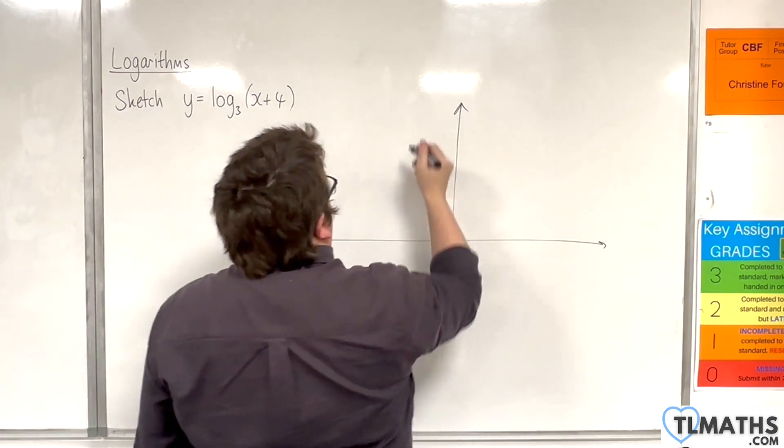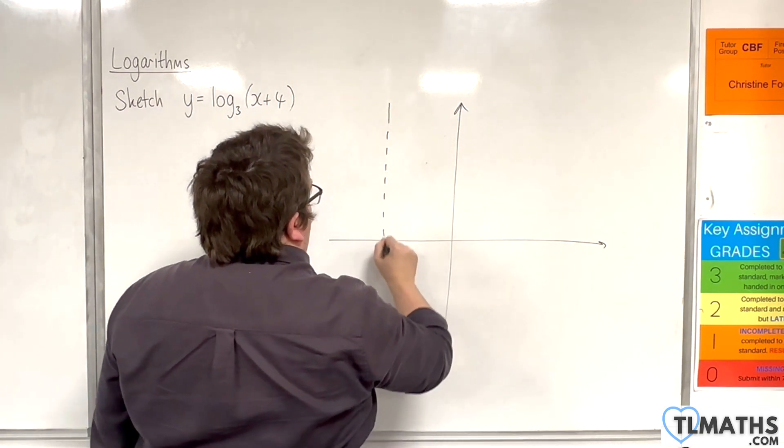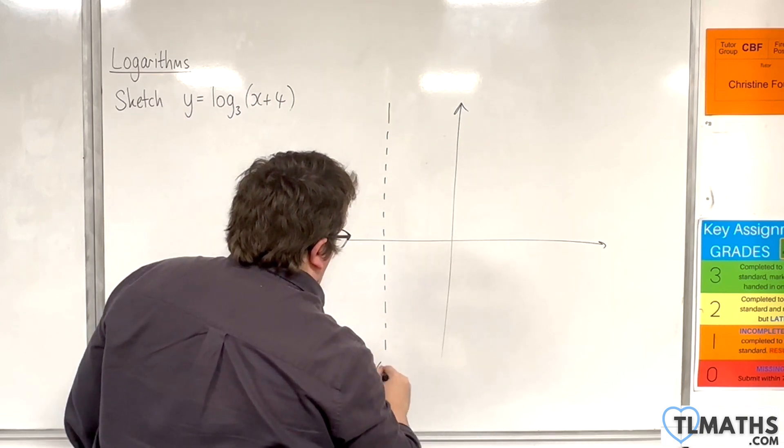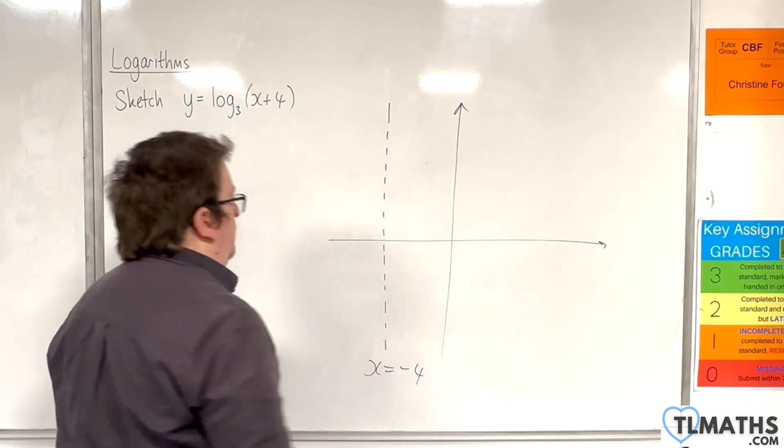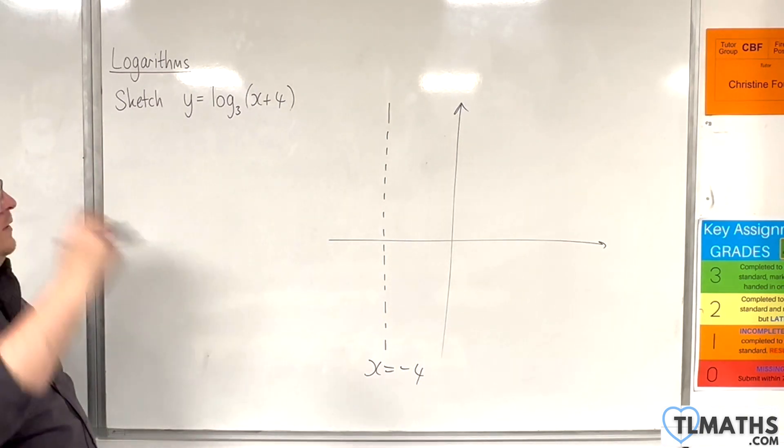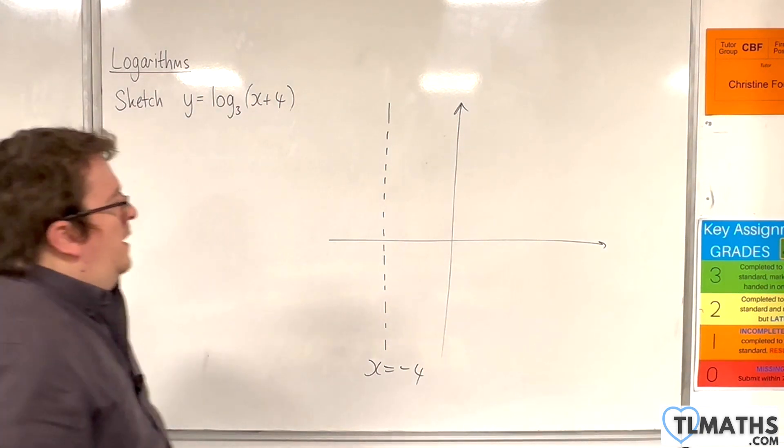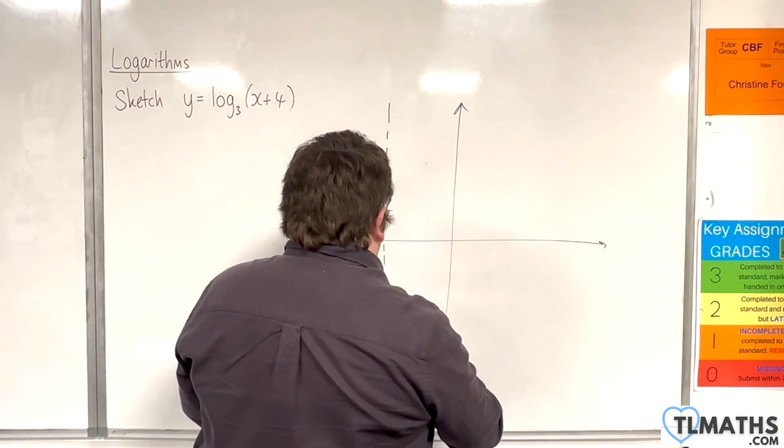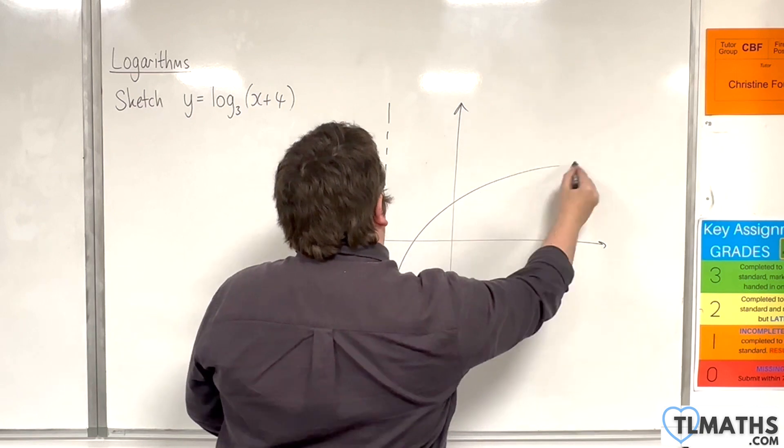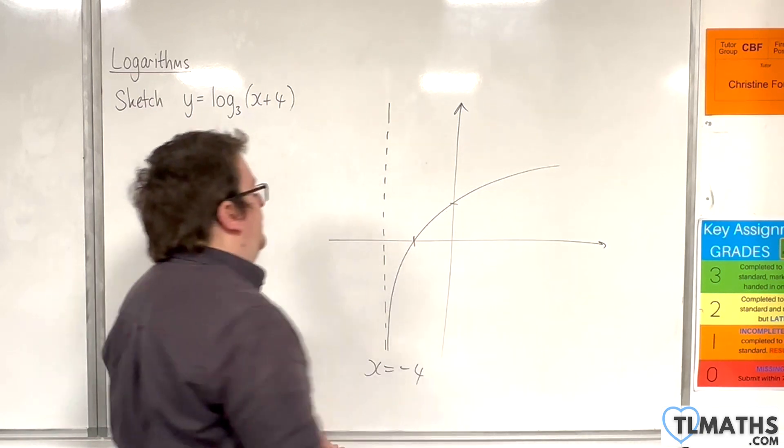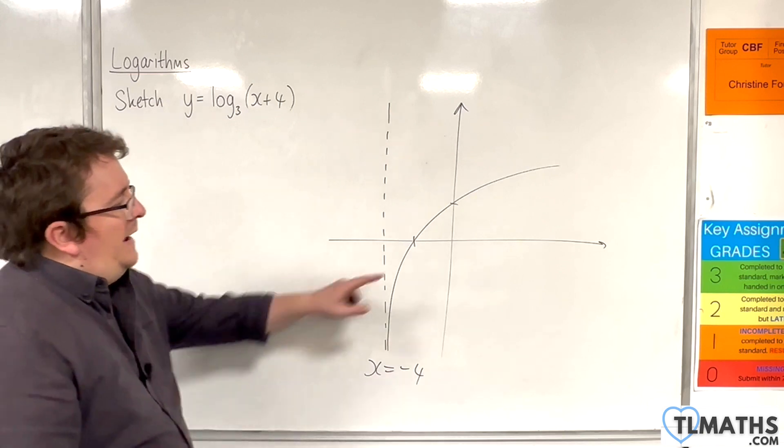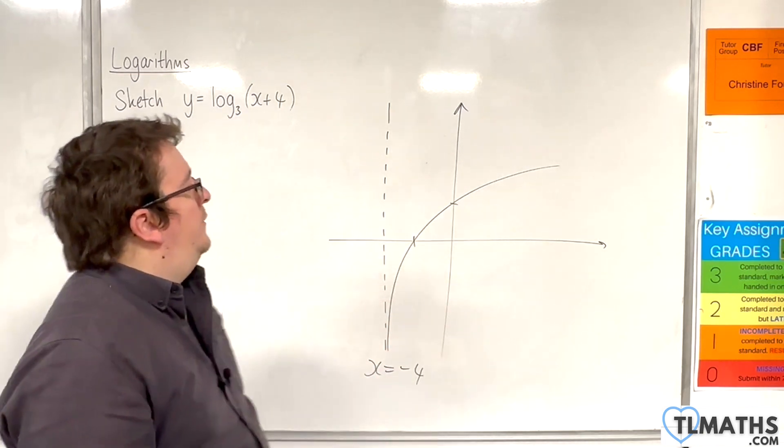That means we have our vertical asymptote at x equals minus 4. Our curve should look like this. We have two points of interest, where it crosses the x-axis and where it crosses the y-axis.